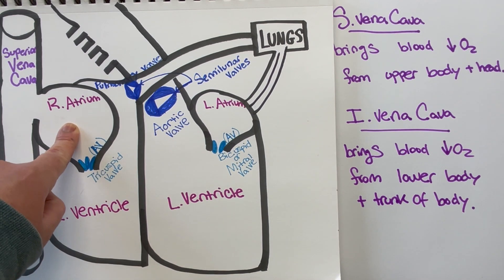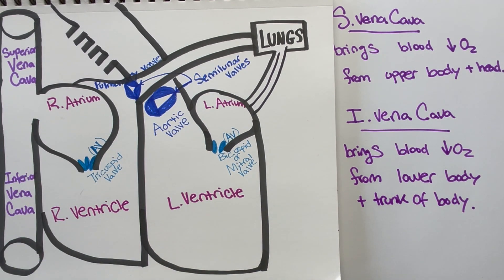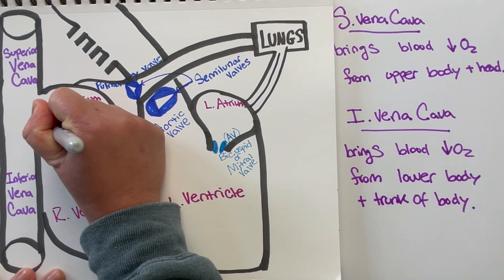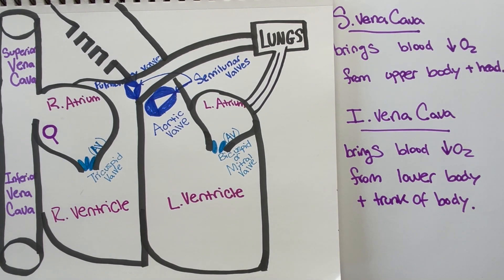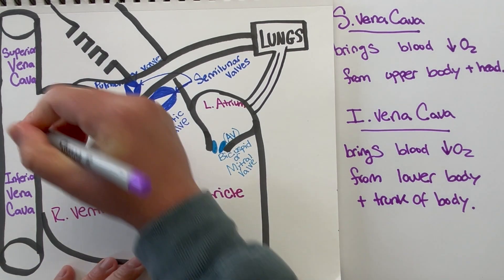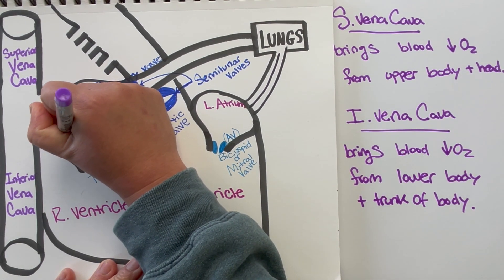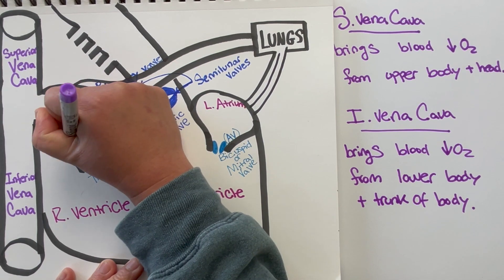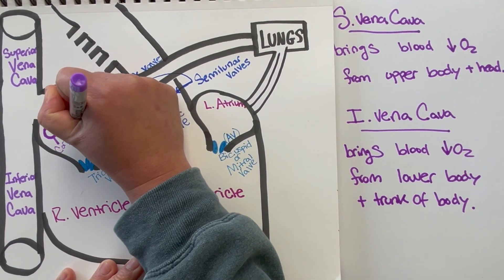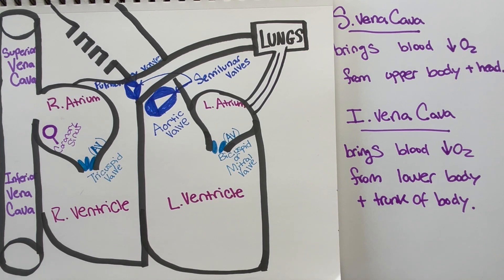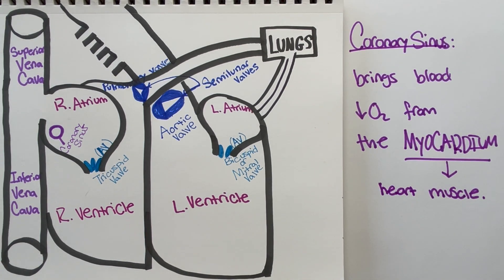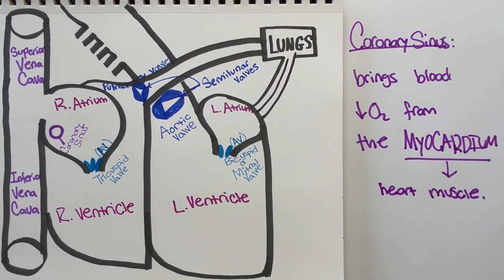Now the right atrium has a few very important structures. The first is the coronary sinus — a small opening that brings deoxygenated blood to the right atrium as well. However, this blood doesn't come from the entire body; it actually comes from the heart itself, specifically the myocardium, which is the heart muscle. So the coronary sinus is part of the coronary system, which is the system that supplies blood to the heart so that the heart can function. We'll talk about that more later.